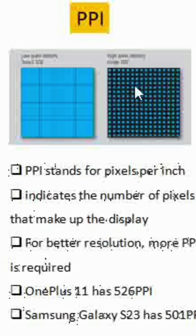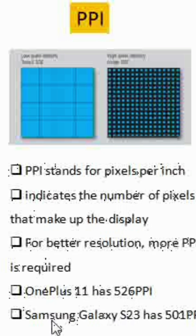That means if you want a good resolution mobile, you need to have high PPI. For example, OnePlus 11 has 526 PPI which is huge. Samsung Galaxy S23 has 501 PPI. Lower-end phones will have around 300 to 500.